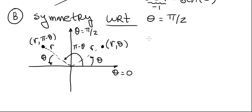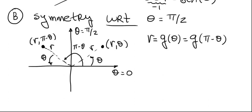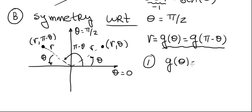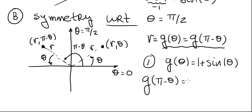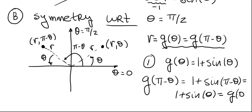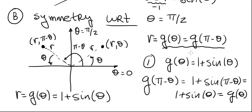So the way to detect symmetry with respect to the line theta equals pi over two is: take the original equation — in this case r equals g of theta — then replace theta with pi minus theta and plug it into the function. If we get back the same r, we've detected symmetry. Our first equation is g of theta equals 1 plus sine theta. Plugging in pi minus theta gives 1 plus sine of pi minus theta, which by our trig identity equals 1 plus sine of theta — exactly our original g of theta. So r equals 1 plus sine theta is symmetric with respect to the y-axis.